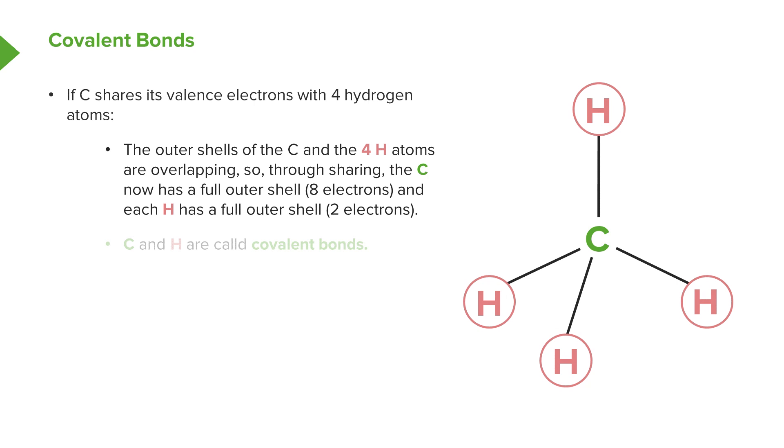The hydrogen gains the electron it requires to create 1s2, and the carbon can share the four electrons from the hydrogen to create the 2s2, 2p6 outer shell.